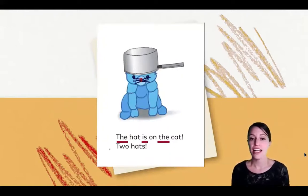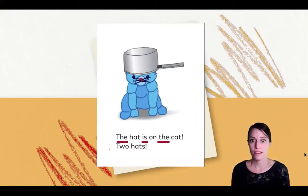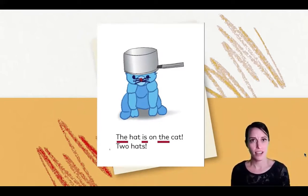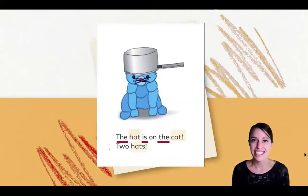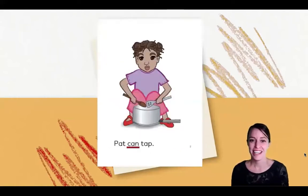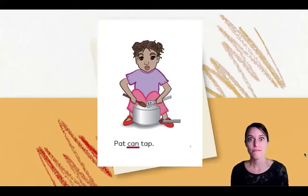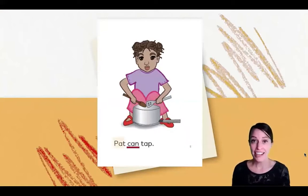The hat is on the cat. Two hats. There are so many high frequency words on that page. Did you also hear words with a short vowel a? Hat, cat, and hats. Great work. Pat can tap. I heard some also — Pat has a short vowel a and so does tap.